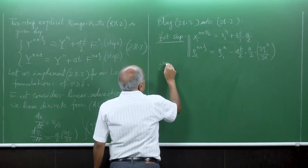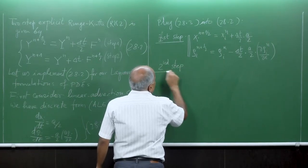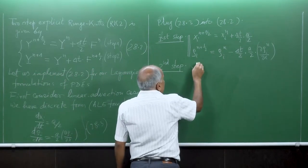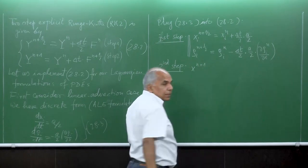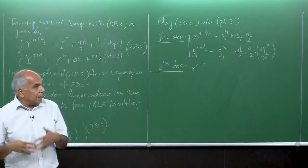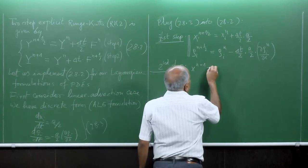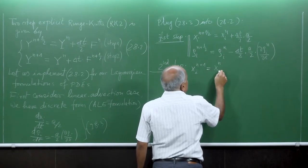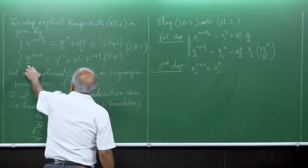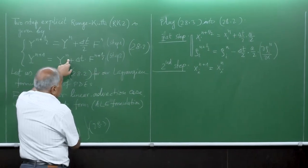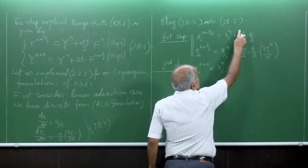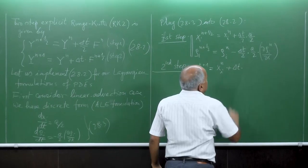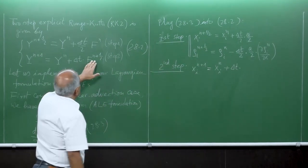Then we have the second step. Our second step will be: x_i^{n+1} — because we are looking not at x_{n+1/2} but at x_{n+1}. x_i^{n+1} = x_i^n plus, instead of delta_t/2, I have delta_t times y_{n+1/2}.